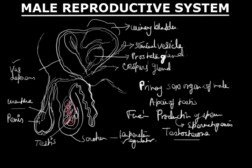The penis is the muscular organ that serves both a urinary and reproductive function — it allows the passage of both urine and sperm. The urethra works as a common passage for both urine and sperms.